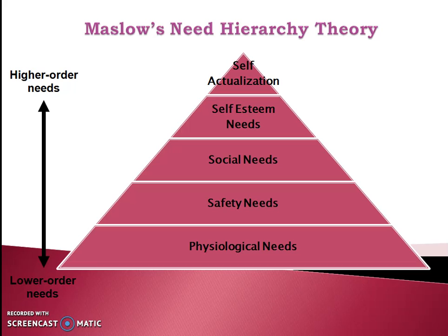There were various limitations of Maslow's need hierarchy. The major limitation was that it is not necessary that everybody follows the same hierarchy. For some people, social needs may be more important than physiological needs, or self-actualization needs could be more important than self-esteem needs. Various other theorists discussed these limitations.